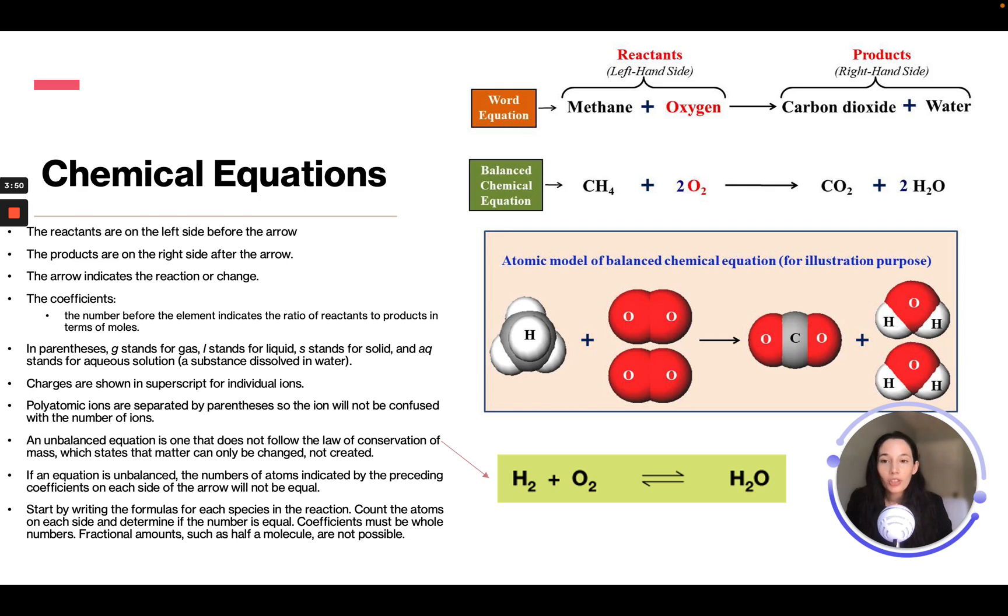An unbalanced equation is one that does not follow the law of conservation of mass, which states that matter can only be changed, not created. If you look down here, this is an unbalanced equation because on this side we have two hydrogen and two oxygen, but we have two hydrogen but one oxygen, so it's not balanced. If an equation is unbalanced, the number of atoms indicated by the preceding coefficients on each side of the arrow will not be equal.